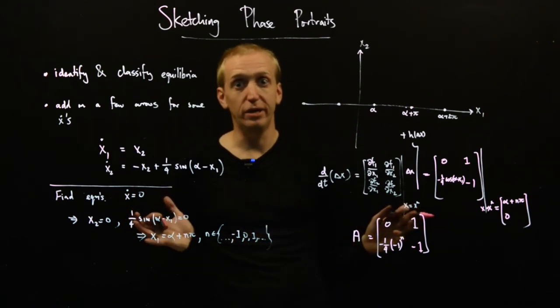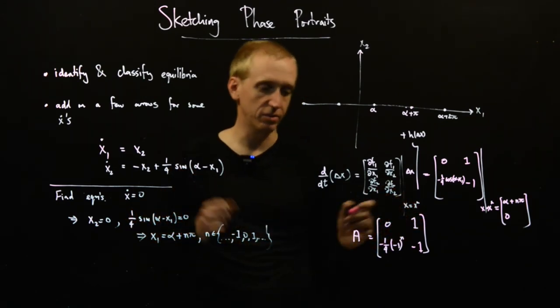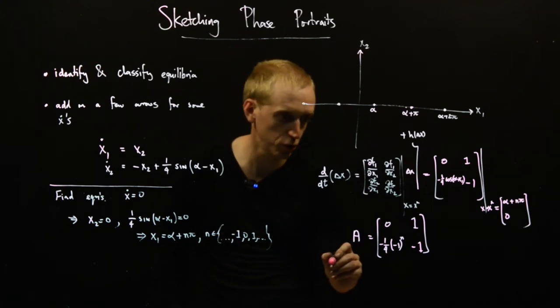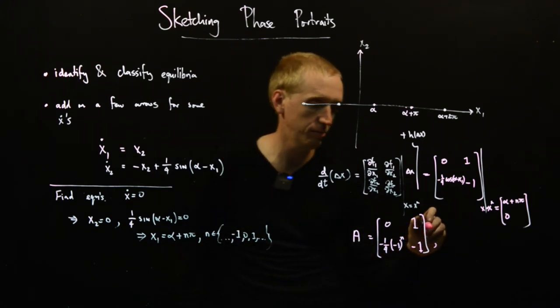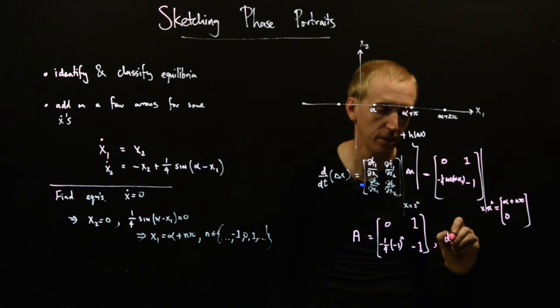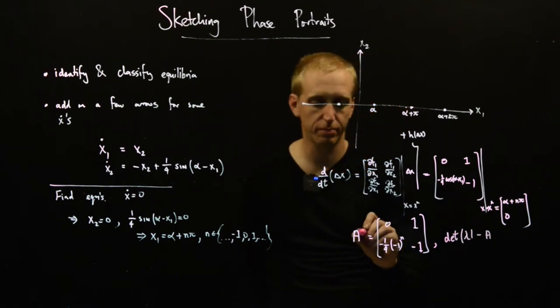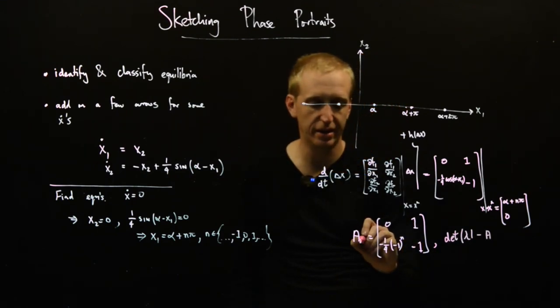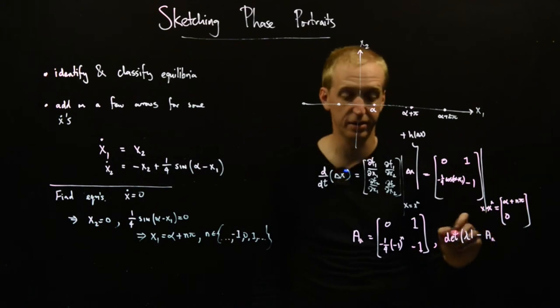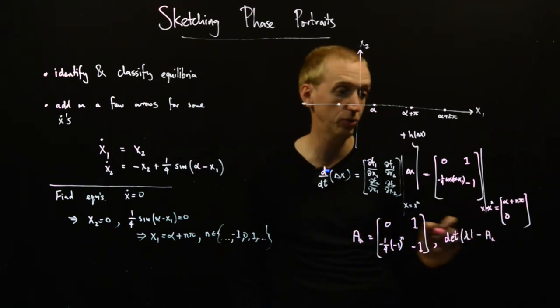So to do that, we need to find the eigenvalues, which means that we need to find the solutions. Determinant lambda i minus a.